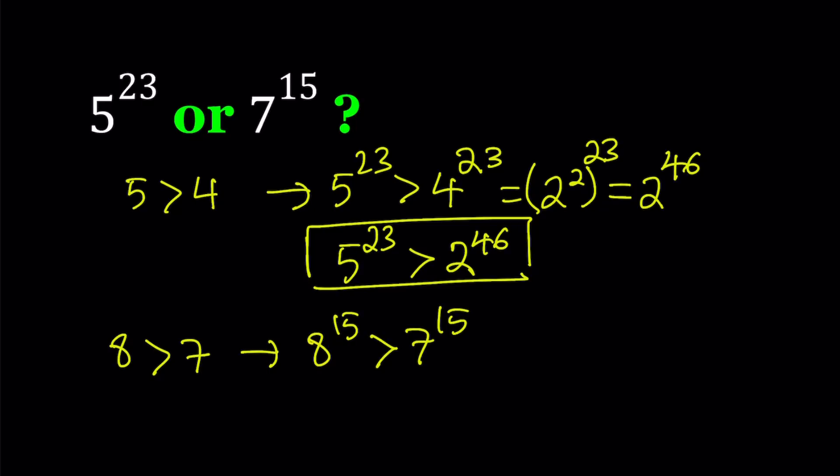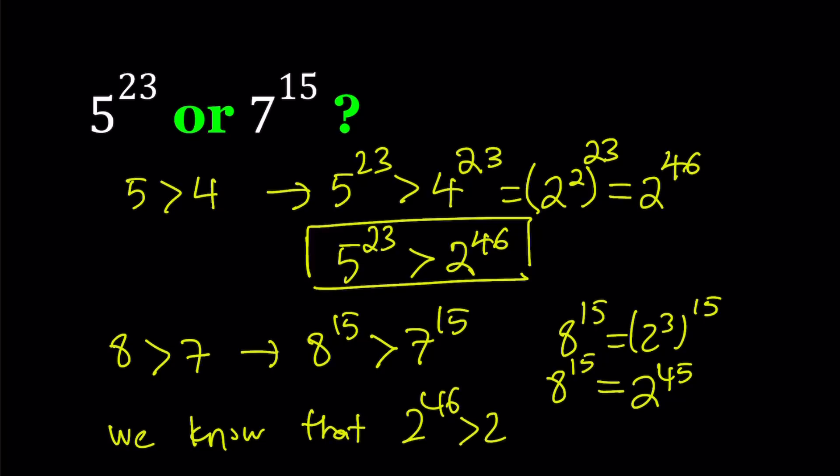And we do know that 8 to the power 15 is 2 to the power 3 to the power 15. Therefore, 8 to the power 15 can be written as 2 to the power 45 because 3 times 15 is 45. And we also know that 2 to the power 46 is greater than 2 to the power 45.